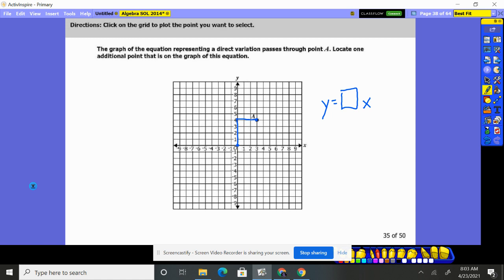Rise 4, run 3. So I could rise 4, run 3 - I know there's another point right there at (6,8). (6,8) would be another spot.